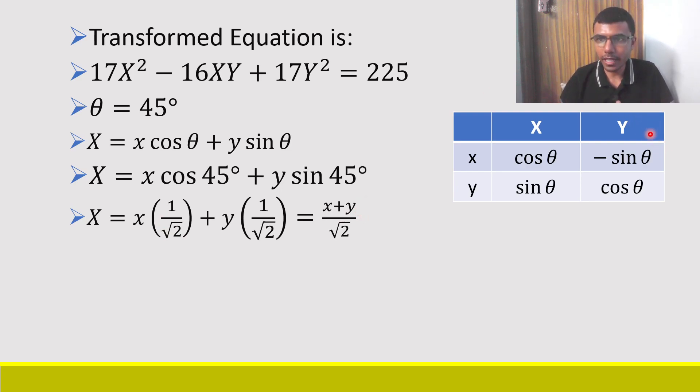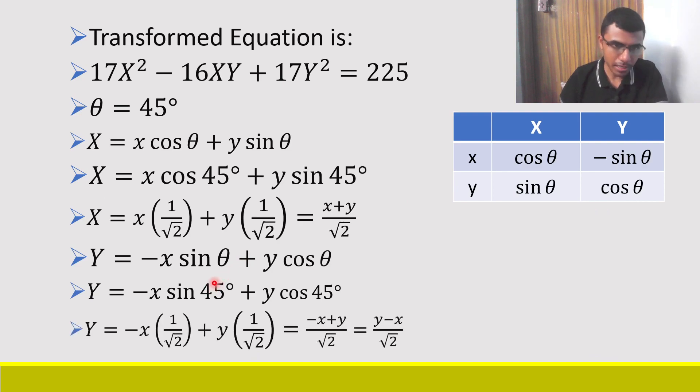Now next, capital Y is nothing but small x times -sin θ plus small y times cos θ. Again substitute θ as 45 degrees. After calculations what I get is (-x + y)/√2. Just write it like this: (y - x)/√2.